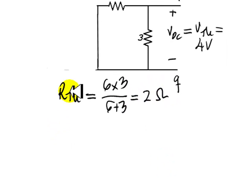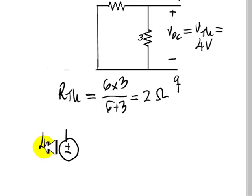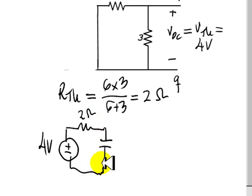The capacitor sees for t greater than zero an equivalent circuit that has a voltage of 4 volts and an equivalent resistance of 2 ohms. This is the circuit the capacitor sees for t greater than zero.